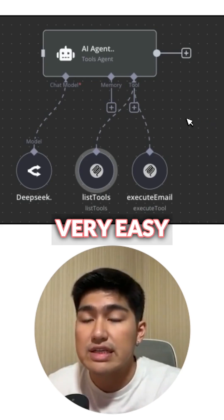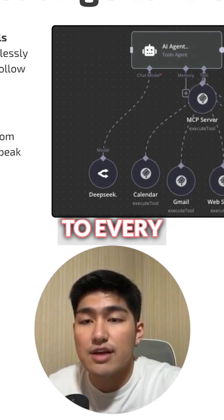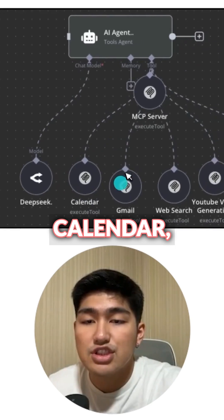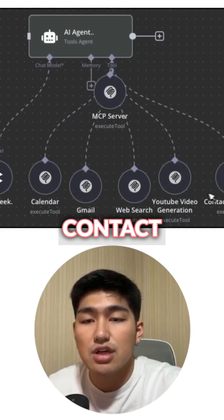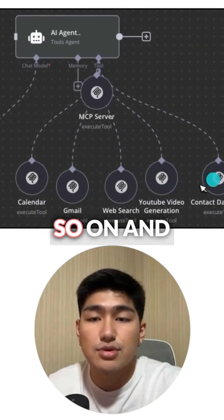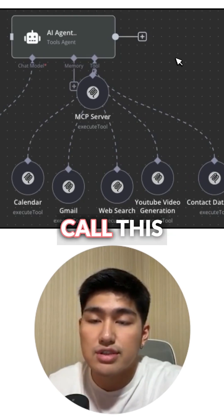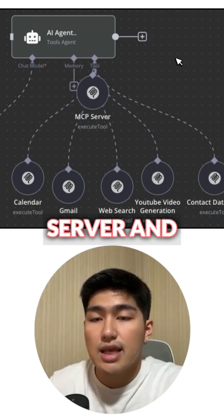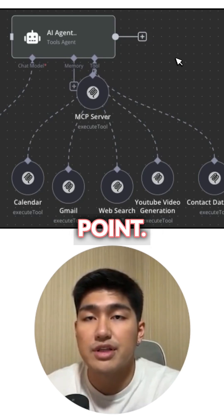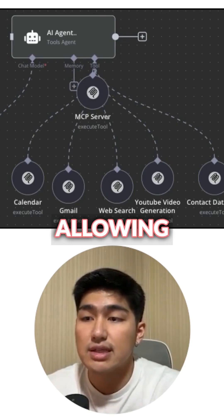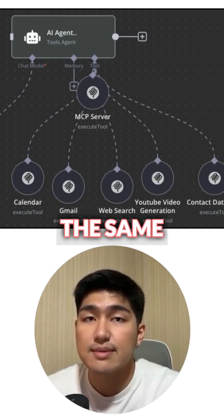This itself makes everything very easy to manage. Imagine if the AI agent has a server that connects to every single tool — like Calendar, Gmail, Web Search, YouTube video generation, contact data, and so on. Now all the AI agent has to do is call this specific MCP server and gain access to all of them from a single point. This makes management super easy, allowing tools and AI models from different vendors to all speak the same language.